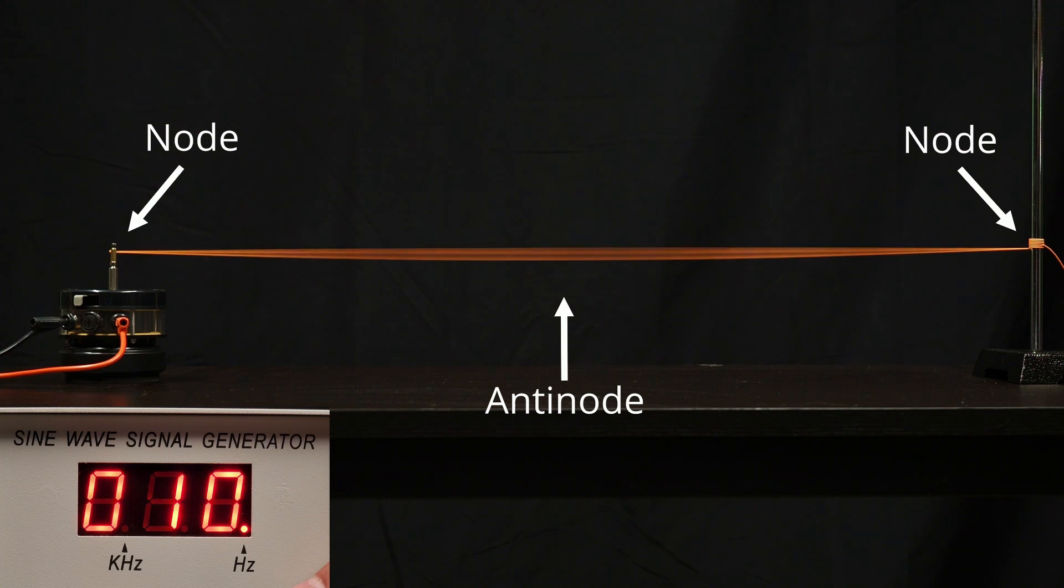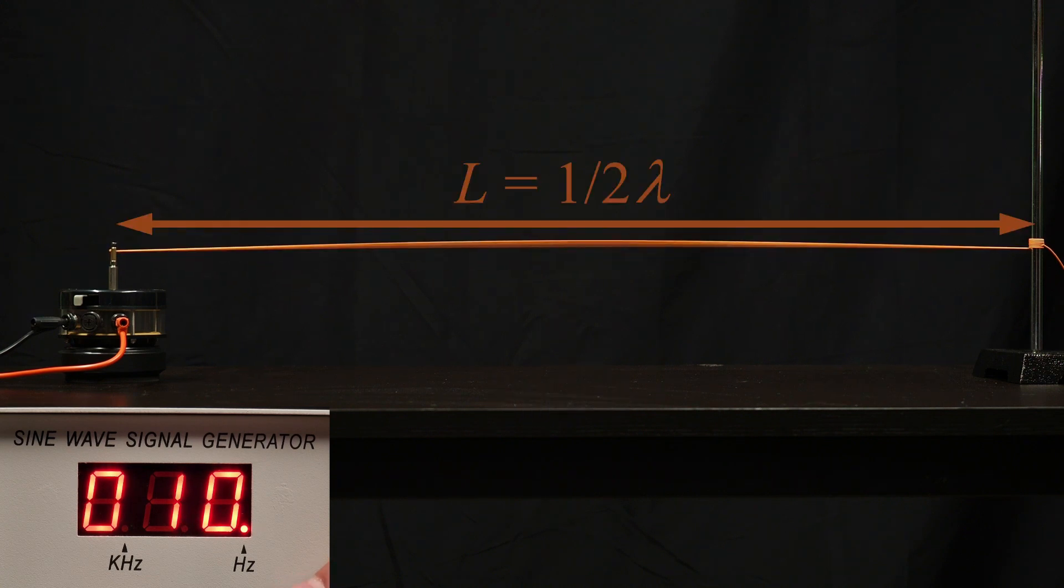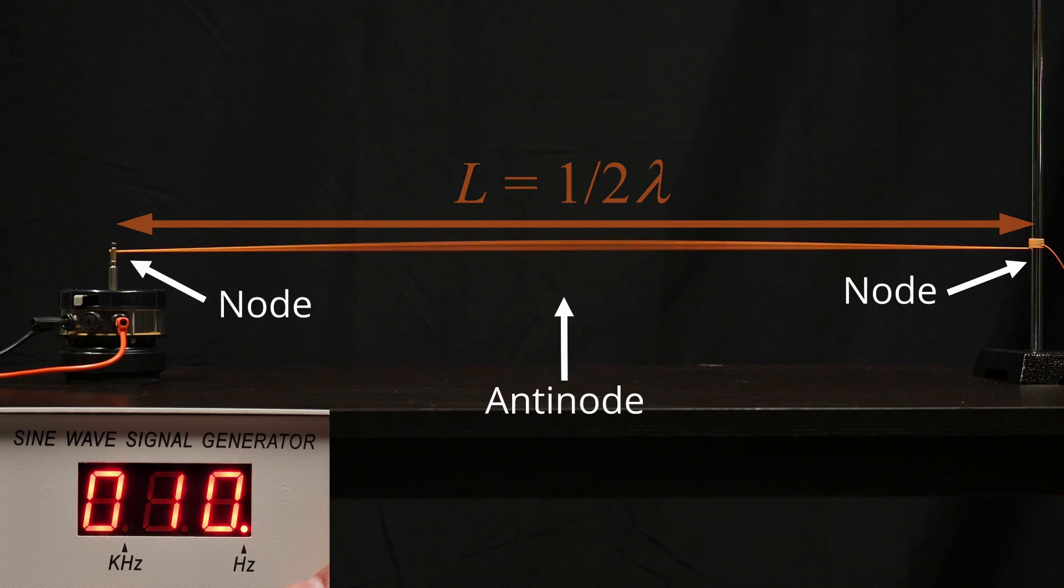For the first possible standing wave, half of a wavelength fits in the string's length, since each end was a node and there was a single anti-node in the middle.